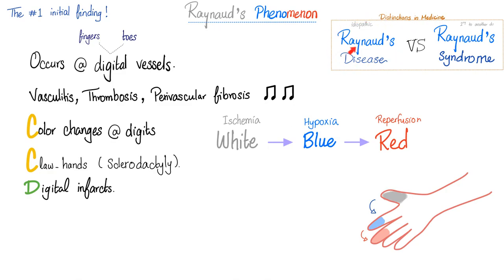What is the difference between Raynaud's disease and Raynaud's syndrome? Raynaud's disease is idiopathic — the patient has it for an unknown reason. Raynaud's syndrome is secondary to other diseases, such as systemic sclerosis, lupus, or rheumatoid arthritis.